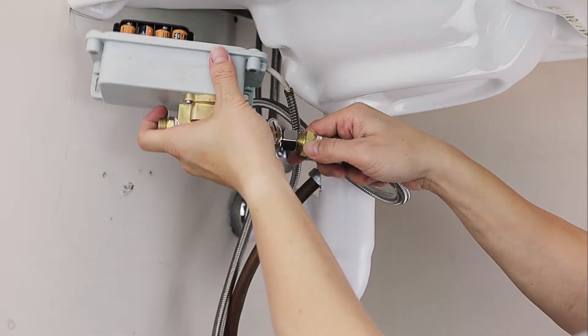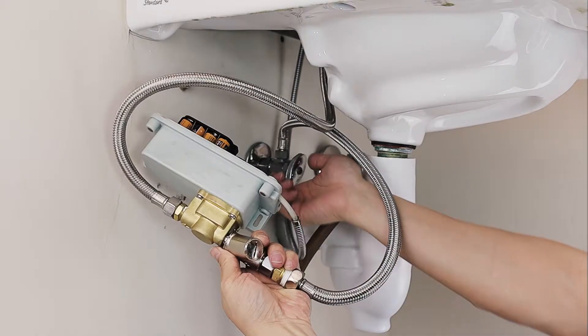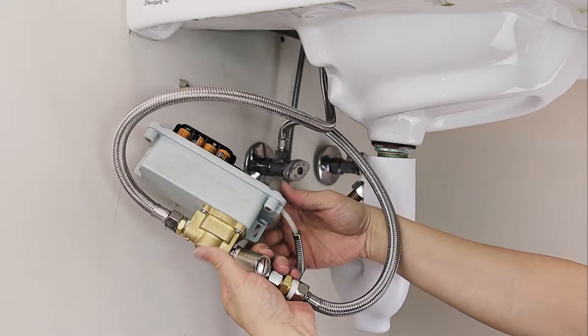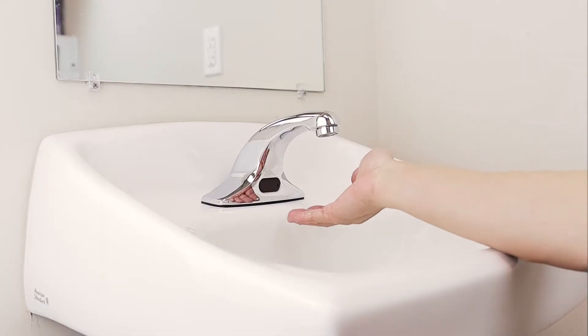Reconnect the water supply lines to the control box without the lid. Turn on the water and check for leaks. Test the faucet for proper operation.